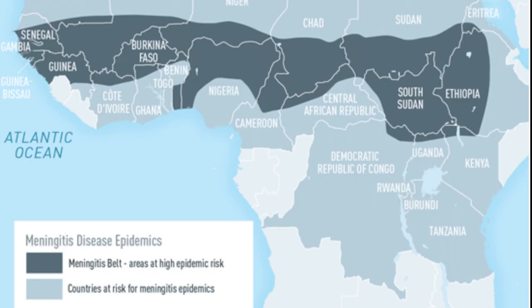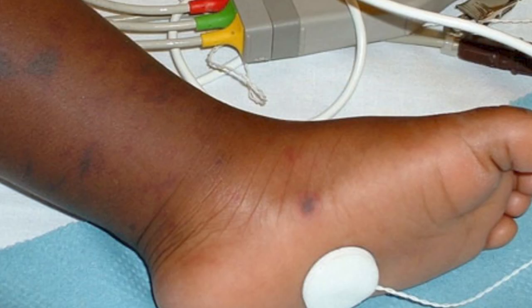Today, meningitis is prevalent in what is known as the Meningitis Belt in Africa, stretching from Gambia to Ethiopia. The Meningitis Belt of Sub-Saharan Africa has the highest rates of meningococcal disease in the world. It is suspected that the low rainfall in this region allows for the greater spread, and those with a compromised immune system and those living in unsanitary conditions such as refugees are more at risk of contracting the disease.